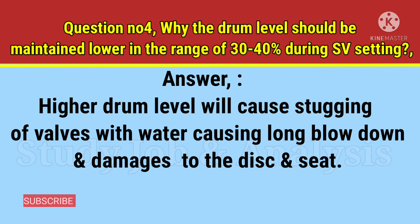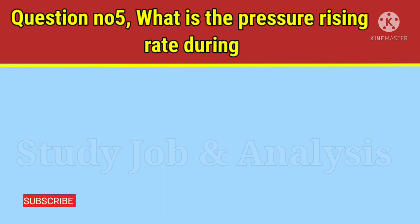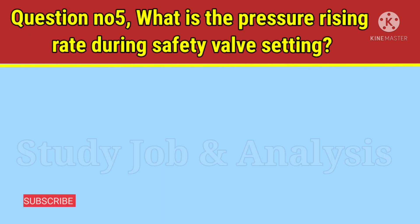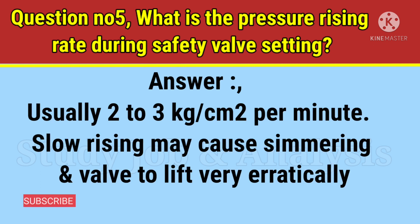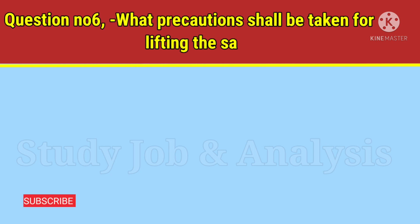Question number five: what is the pressure rising rate during safety valve setting? Answer: Usually two to three kilograms per square centimeter per minute. A slow rising rate may cause simmering or the valve to lift very erratically.